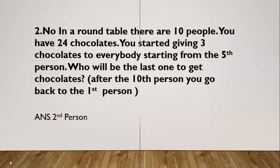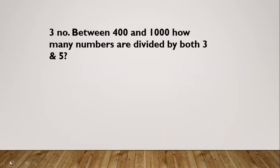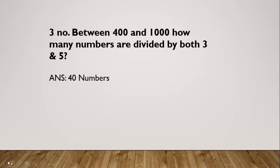Let's go to our next problem. Between 400 and 1000, how many numbers are divisible by both 3 and 5? First we have to find the LCM of 3 and 5. The LCM of 3 and 5 is 15. Now we divide 1000 by 15 — the answer is 66. Then we divide 400 by 15 — the answer is 26. After that we subtract 26 from 66. So our final answer is 40 numbers. There are 40 numbers between 400 and 1000 which are divisible by both 3 and 5.